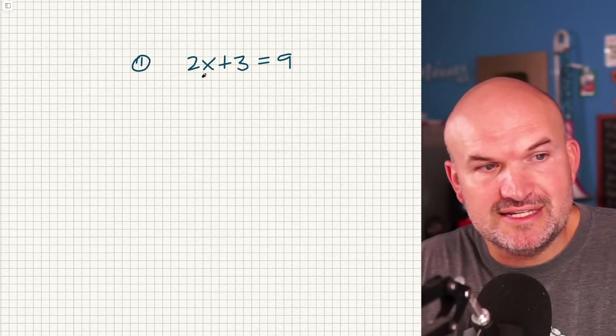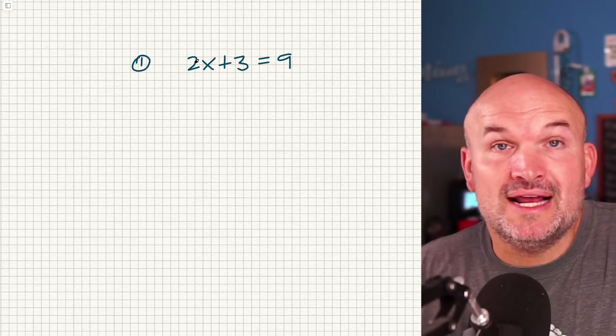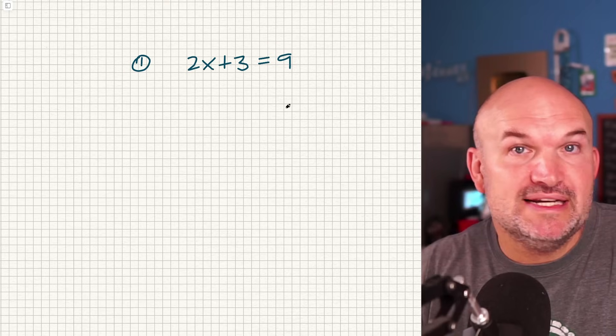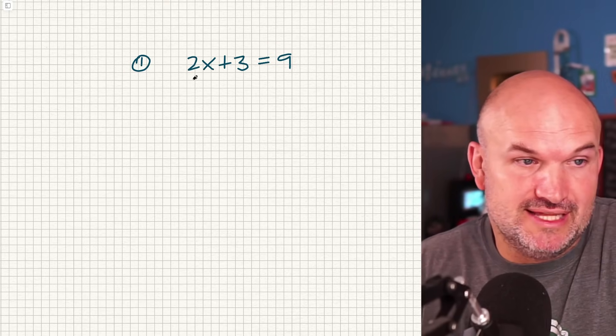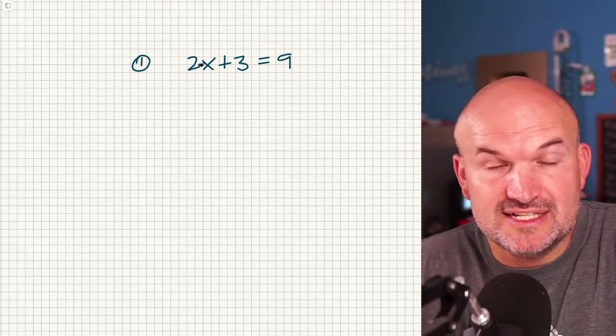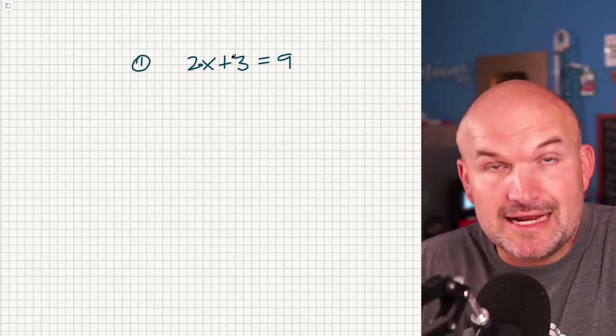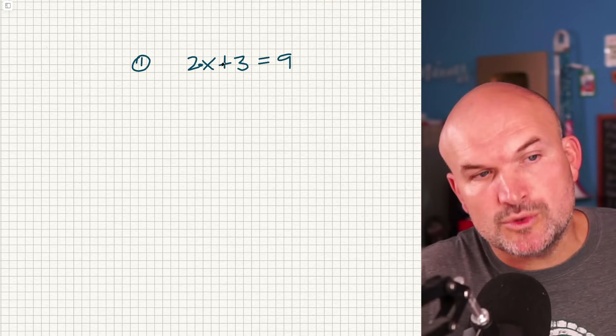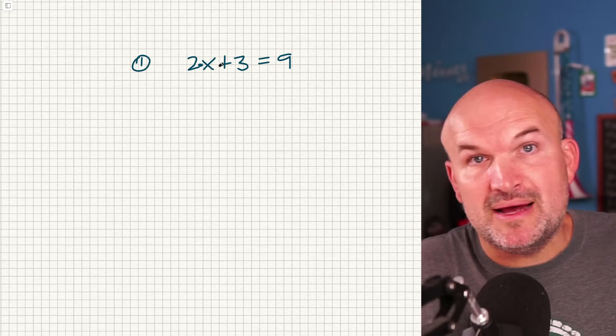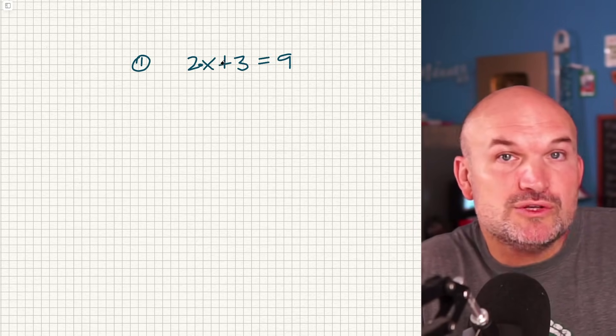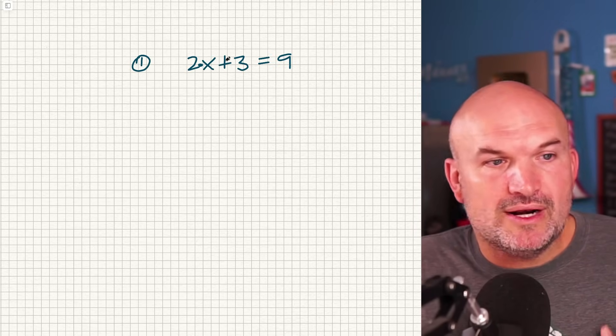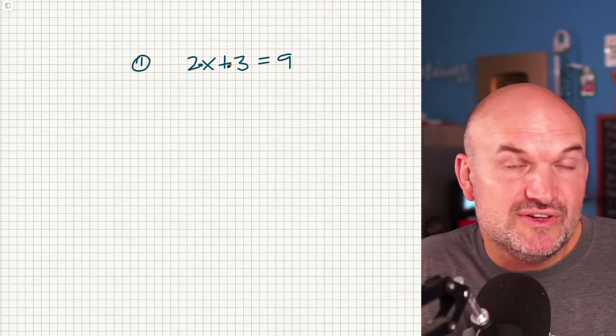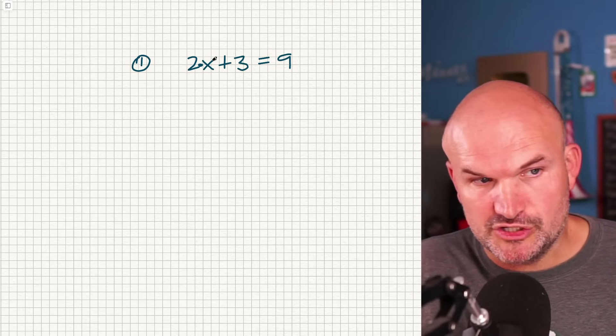So when I look at this, if I want to get my x all by itself, I want to isolate. I want to undo everything that's being applied to the x. Right now, I have a 2 that's being multiplied by it, and I'm adding a 3. When we're using our inverse operations, we want to follow that reverse order of operations. If you remember PEMDAS or GEMDAS, we're going to use the reverse order of that. So I want to undo the operation of addition and subtraction before I undo the operation of multiplication and division.